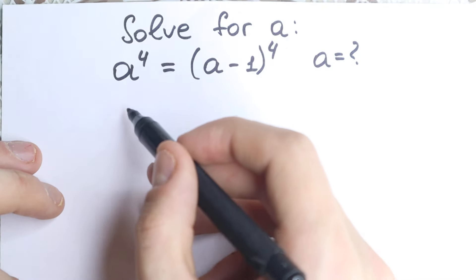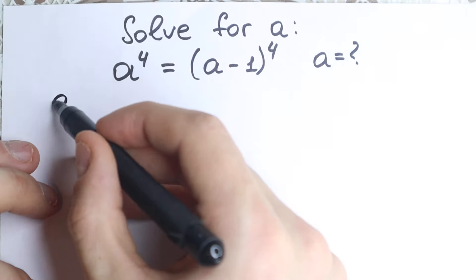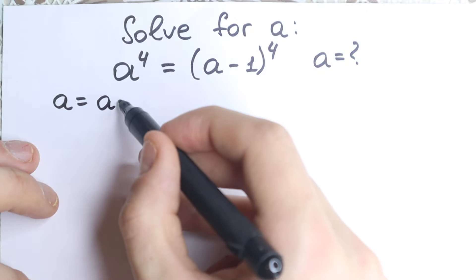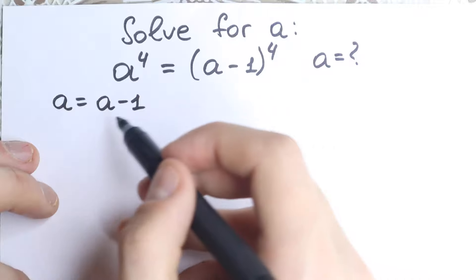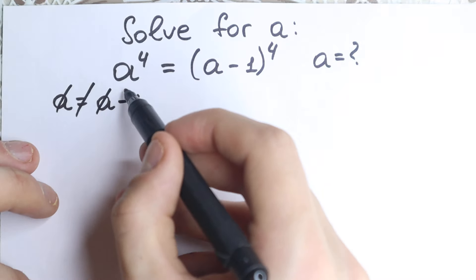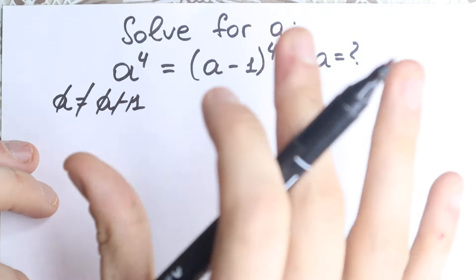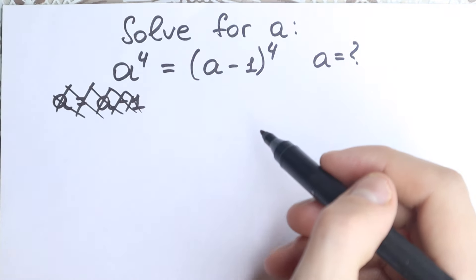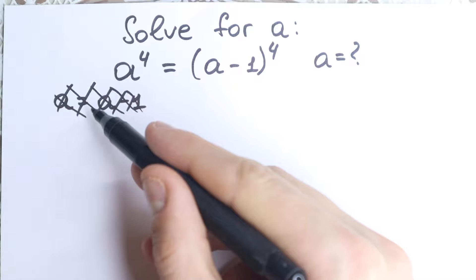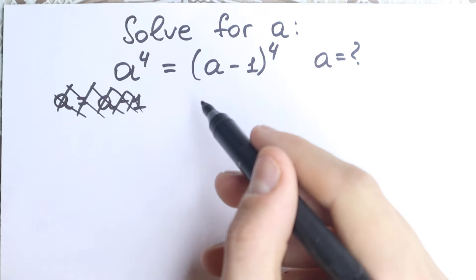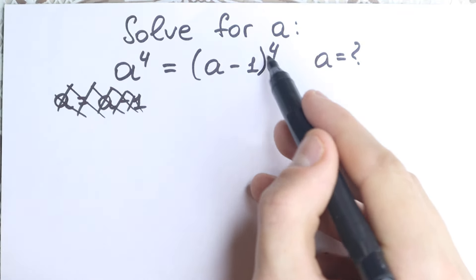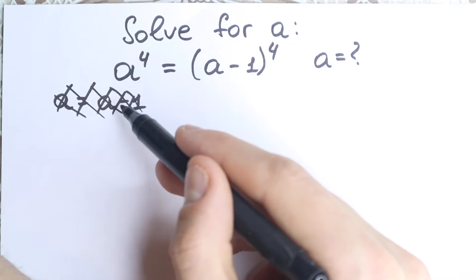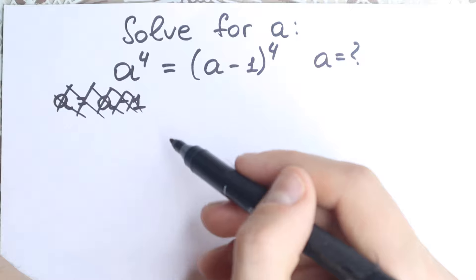A lot of students do this — they take the fourth root from both sides, so the fourth cancels and we have a equal to a minus one. This is absolutely maybe a little bit correct, but it's a very bad solution because you've lost a lot of roots. You'll have only one root, but in math we know that with a fourth degree equation we have no more than four roots, so with this bad trick you forget about the other roots.